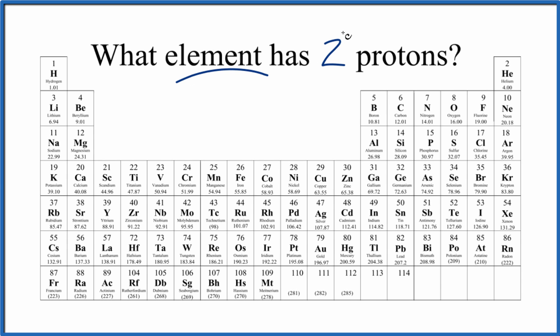So what element has two protons? Here's how you find out. You look at the periodic table and the atomic number on the periodic table equals the number of protons.